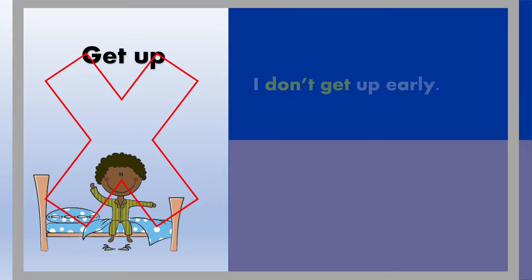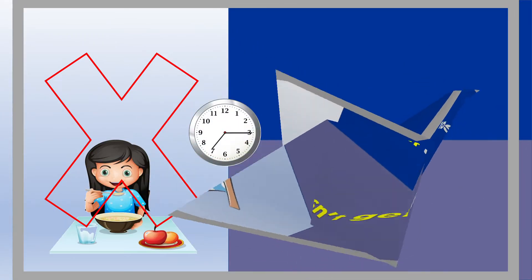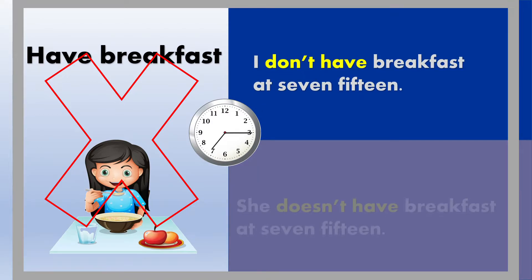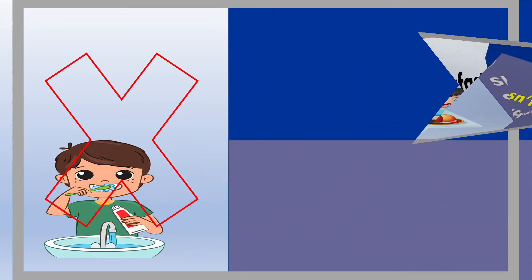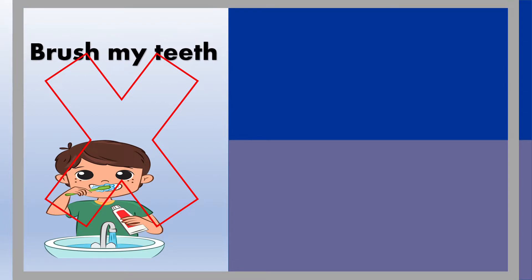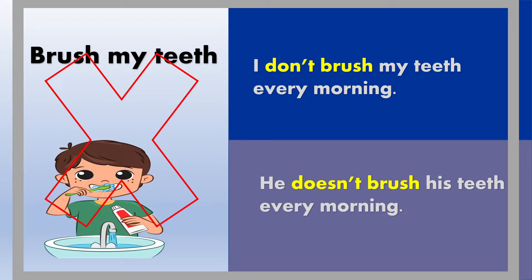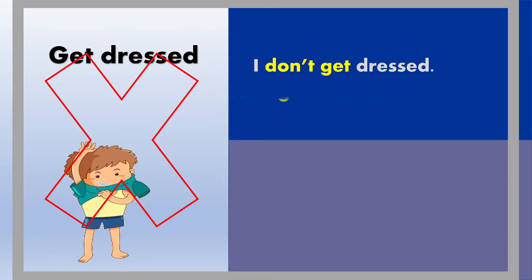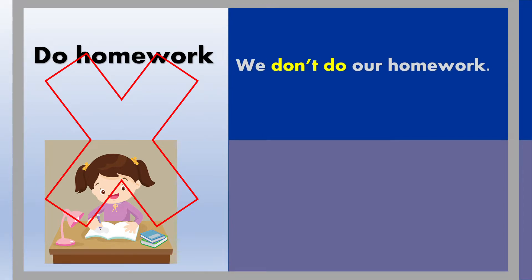Get up: I don't get up early. He doesn't get up early. Have breakfast: I don't have breakfast at 7:15. She doesn't have breakfast at 7:15. Brush my teeth: I don't brush my teeth every morning. He doesn't brush his teeth every morning. Get dressed: I don't get dressed. He doesn't get dressed. Do homework: We don't do our homework. She doesn't do her homework.